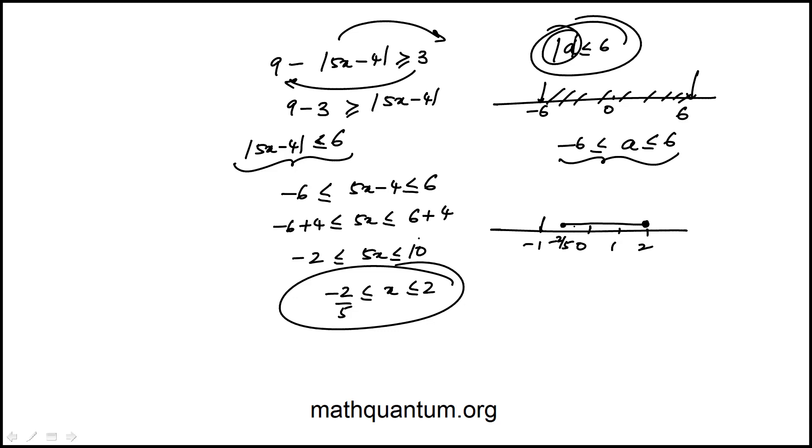If I look at the answer choices, the solution is closed bracket. That means that number is also included to 2, and that's the answer choice B.